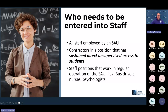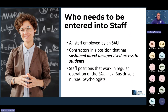So, staff data entry — who needs to be entered? All staff who are employed by an SAU are required to be entered into NEO staff. This is still a manual data entry, so you will need to make sure that you hit every single person and update them in the NEO staff module. Contractors who have sustained direct unsupervised access to students will need to be entered into NEO staff as well. You will need to get a social security number or an educator ID from staff who are contractors. Staff positions that work in regular operations such as bus drivers, nurses, and psychologists also need to be entered. Anyone in your school district performing regular duties in contact with students will need to be entered.